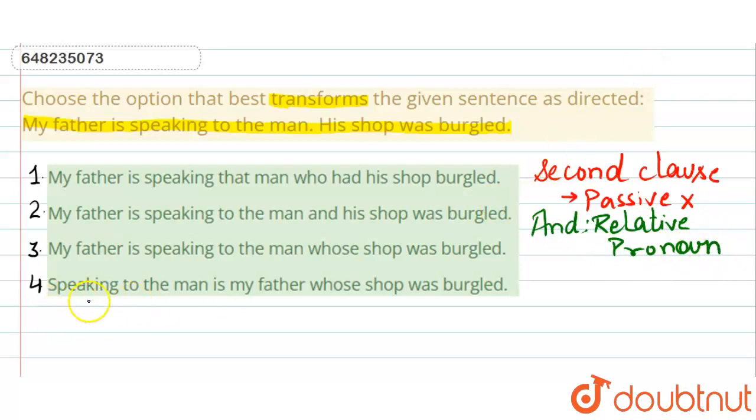Once again, we will see the fourth sentence. The fourth sentence is: Speaking to the man is my father whose shop was burgled. This will be our answer.